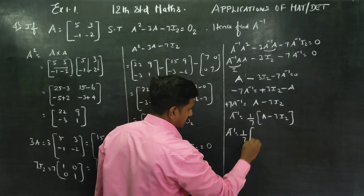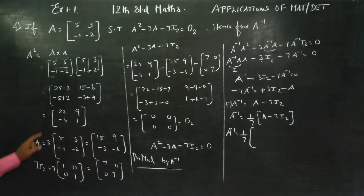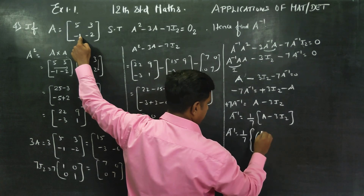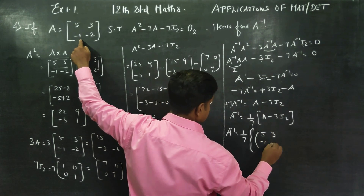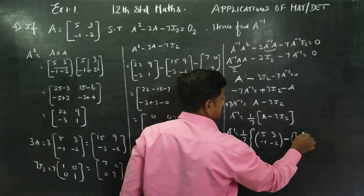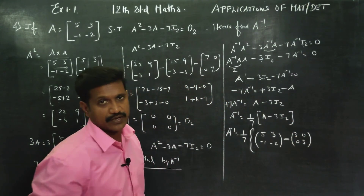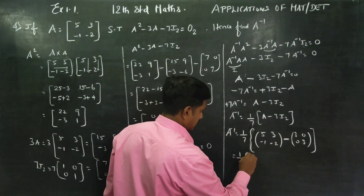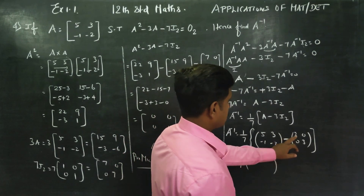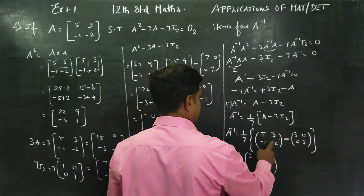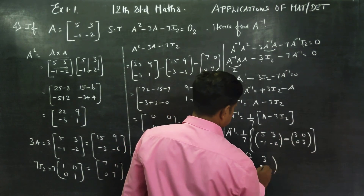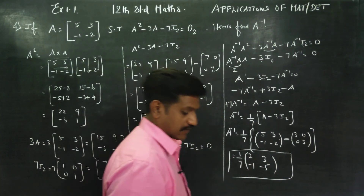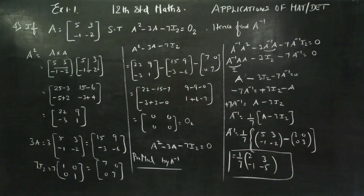A inverse is equal to 1/7 into (A - 3I₂). Substituting A = [5, 3; -1, -2] and 3I₂ = [3, 0; 0, 3], we get A⁻¹ = 1/7 × [2, 3; -1, -5]. This is your A inverse. Thank you.